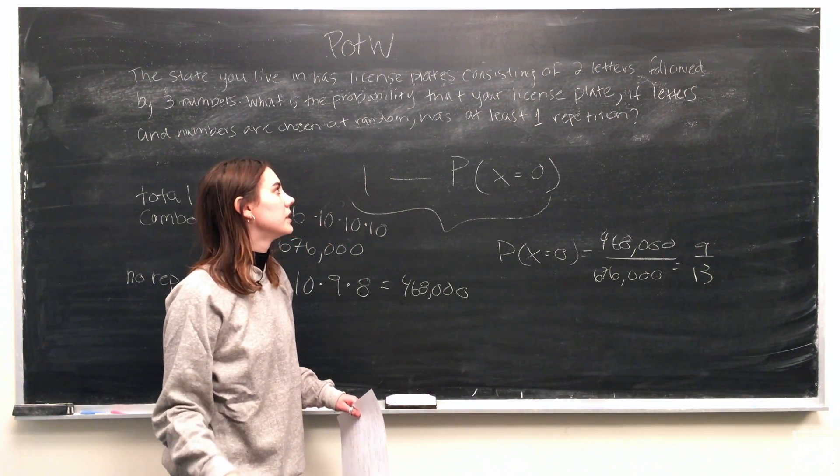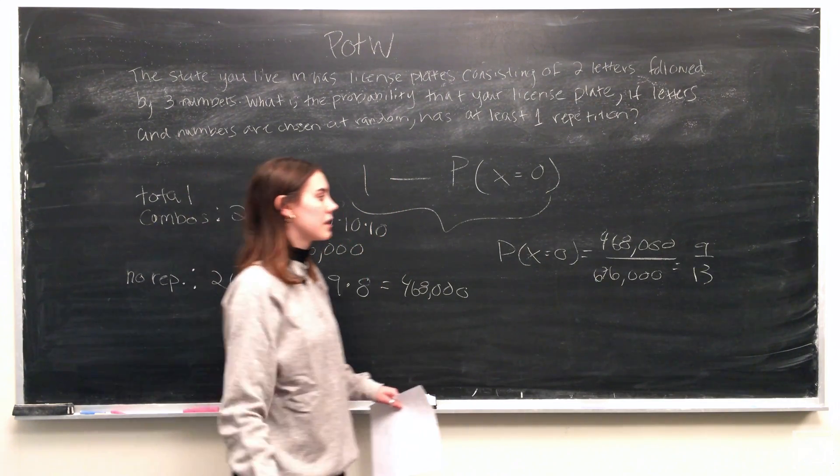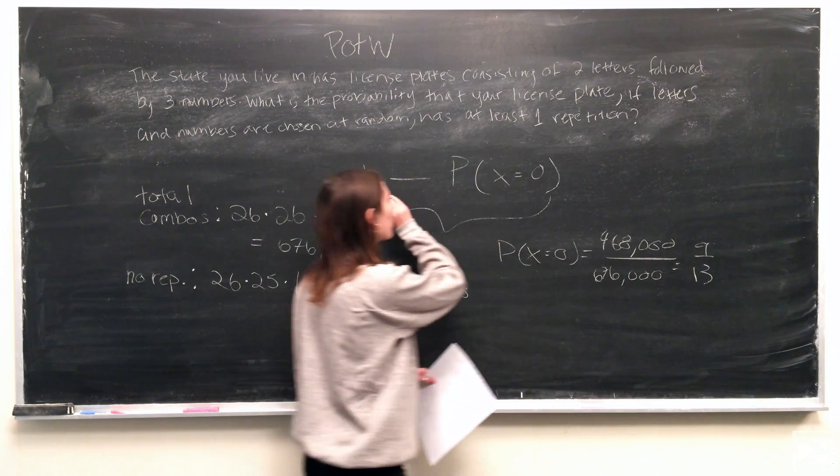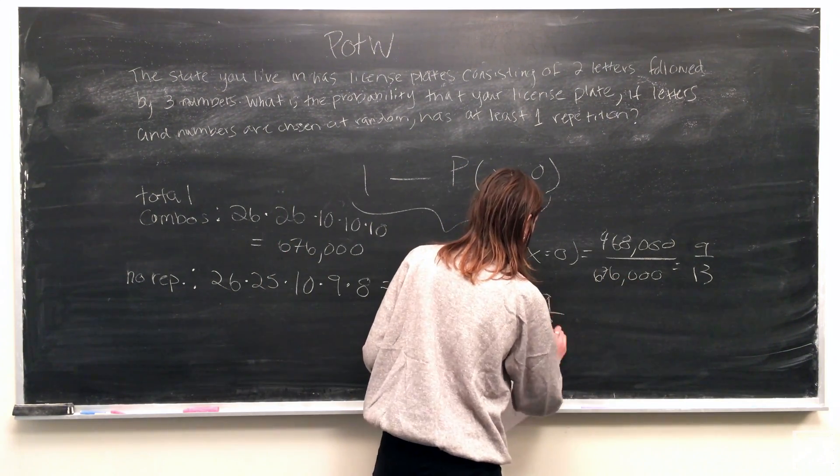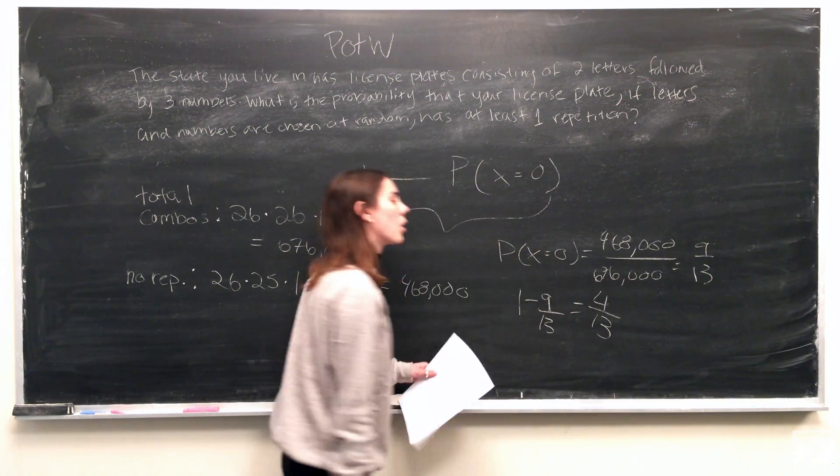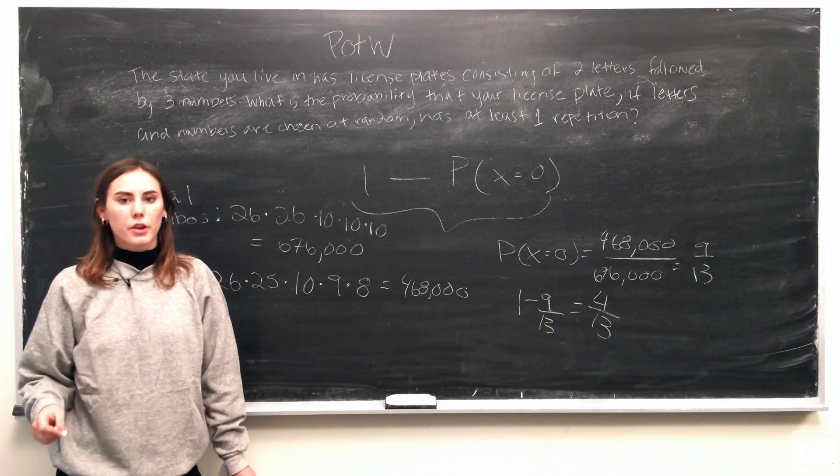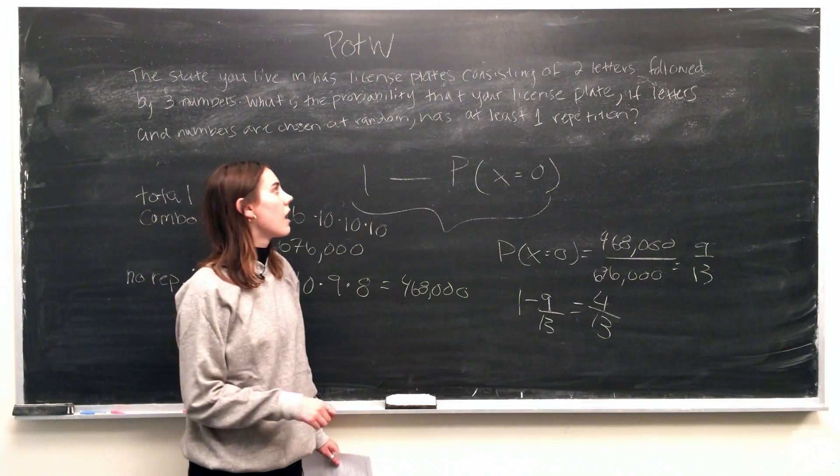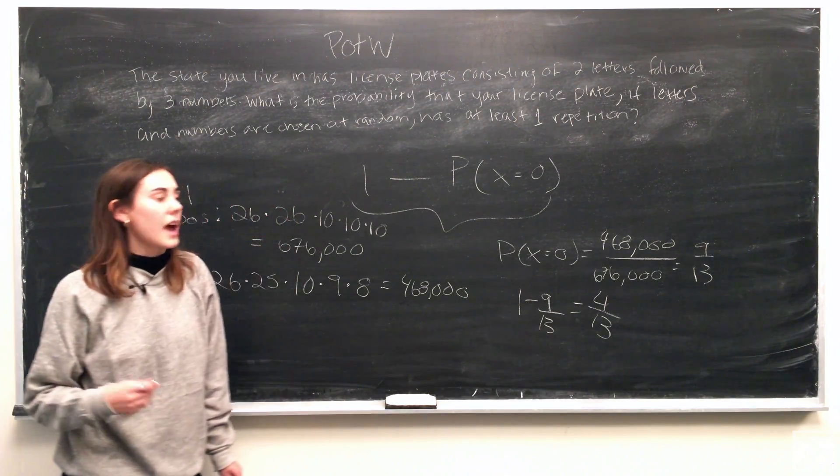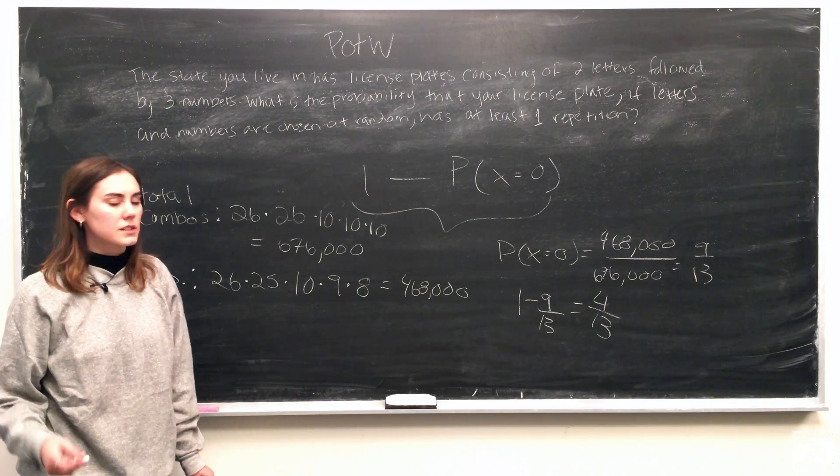So to find the probability of having at least one repetition, we can take this number and subtract it from 1. And what we'll find is that we get 4 over 13. So the probability of your license plate having at least one repetition is 4 thirteenths.